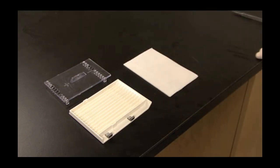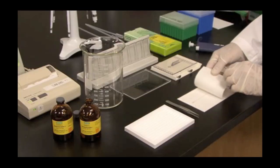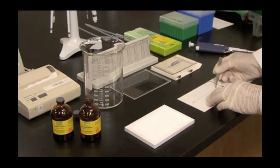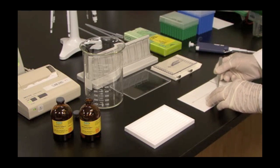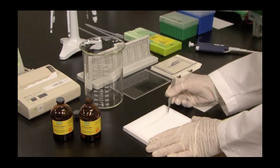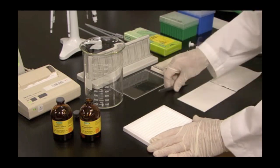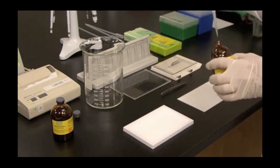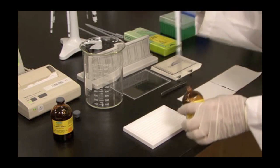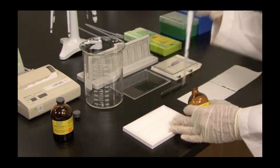The next step is to equilibrate the strips. I prepared buffers from the ReadyPrep 2D Starter Kit as instructed in the manual. Remove the wet filter paper from the top of the IPG strip. Place the IPG strip into a lane gel side up of the rehydration tray. Add two milliliters of equilibration buffer number one to each lane of the rehydration tray that you have a strip.